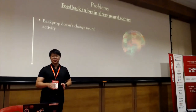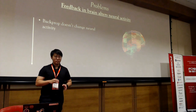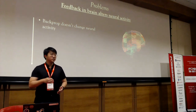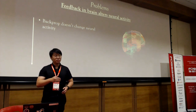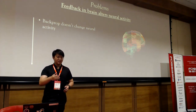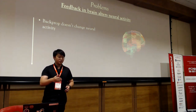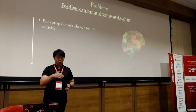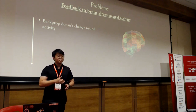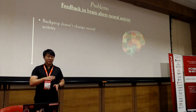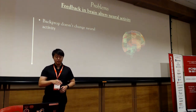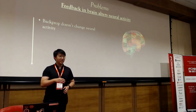Backprop doesn't change neural activity. We use the cost function to evaluate how well the model's predicted value is, then we use backpropagation and stochastic gradient descent to minimize the cost function. Stochastic gradient descent only adjusts the weights and biases — it doesn't change the value in the neurons.